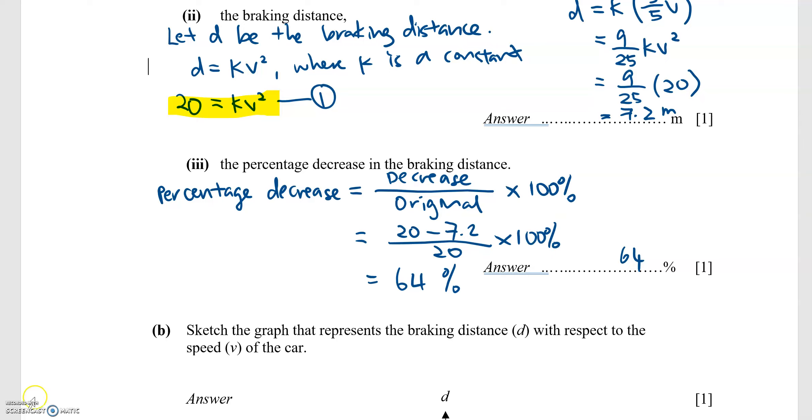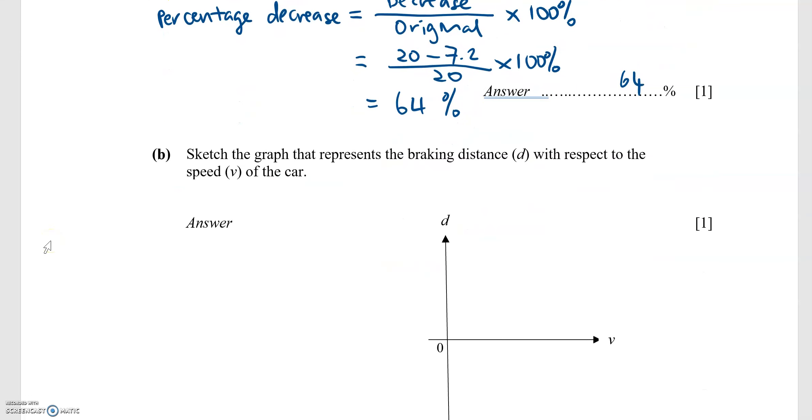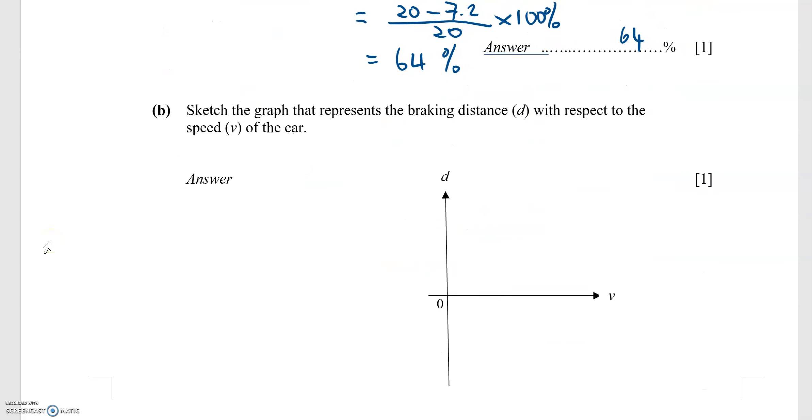For part B, they want us to sketch the graph that represents the braking distance with respect to the speed of the car. Now, I know that the formula is d equals kv squared, where k is a constant.